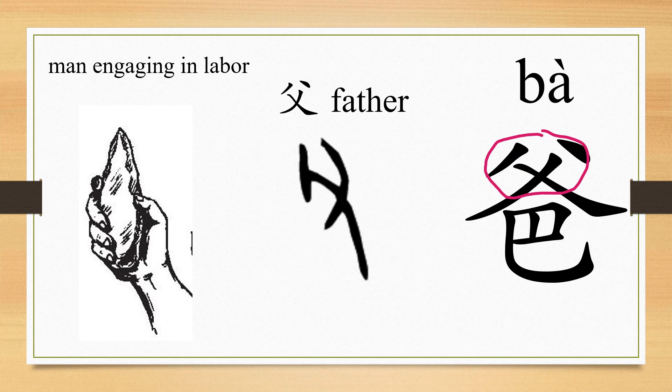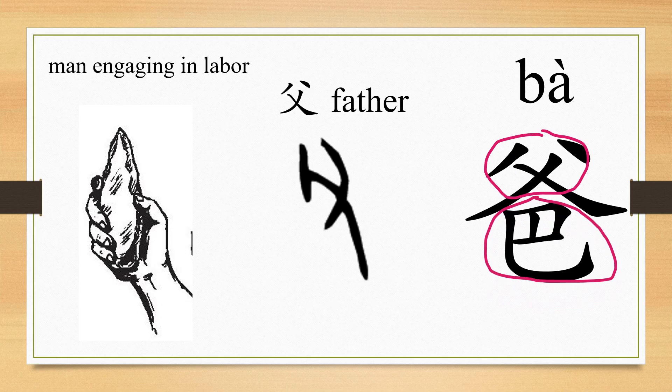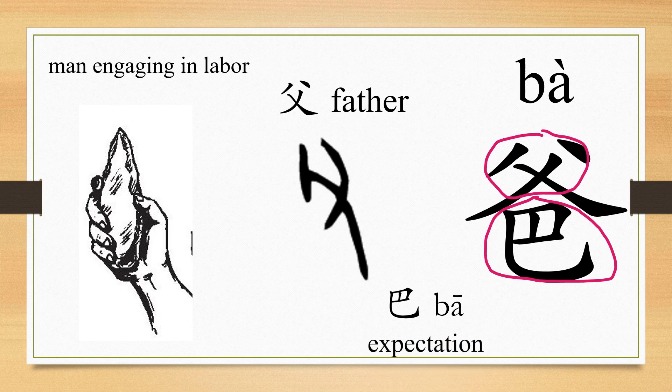Besides that, people add another character on the basis of 父 (Fù) — that is 爸 (Bā). 爸 means expectation, which indicates that the father is a person of a family's hope. So 爸 means father, and is also an addressing for father.